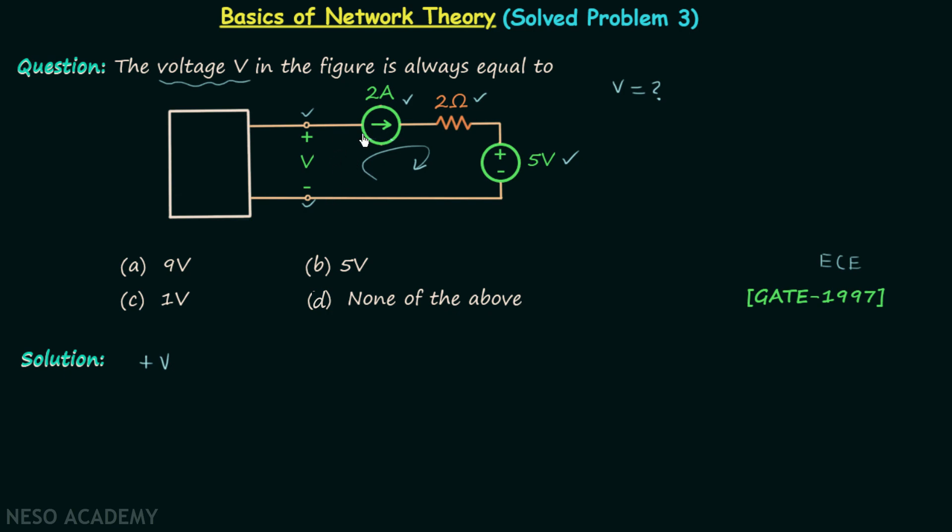In this scenario we cannot find out voltage across the current source. So let's say the voltage across the current source is V sub 2A. Then we will have current 2 amperes multiplied to the resistance 2 ohms, giving us the potential difference across the resistor.